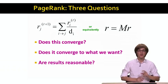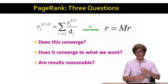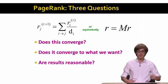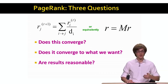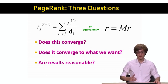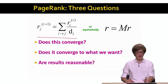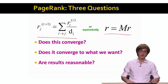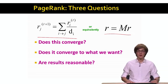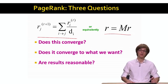What we know so far is that the importance of a page j in a web graph is simply the sum of the importance of pages i that point to it, divided by the out-degree of the source page. We established that this equation can be written as a matrix equation. There are three questions we need to answer: first, does R equals M times R converge? Second, does it converge to what we want? And third, are our results reasonable? We'll answer these questions one by one.